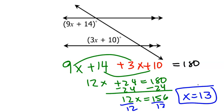And that is how you find missing angle measures when parallel lines are cut by a transversal.